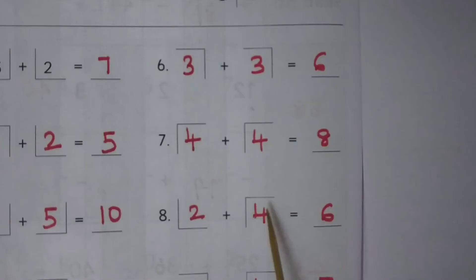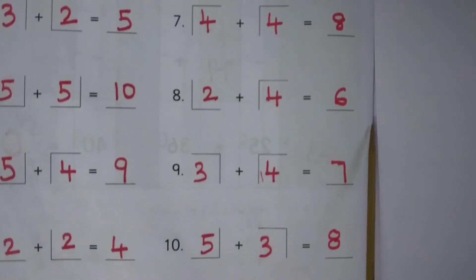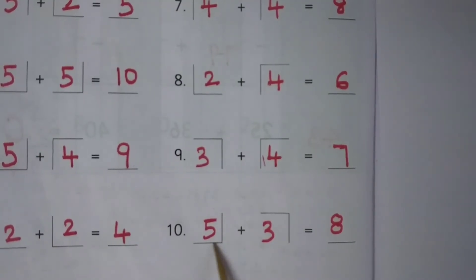2 plus 4 is equal to 6. 3 plus 4 is equal to 7. 5 plus 3 is equal to 8.